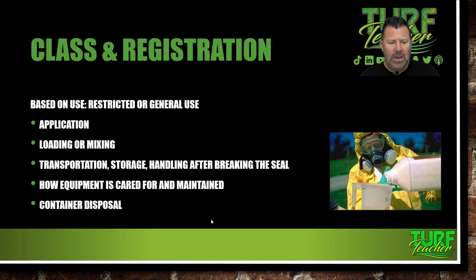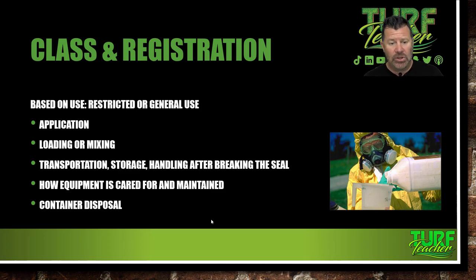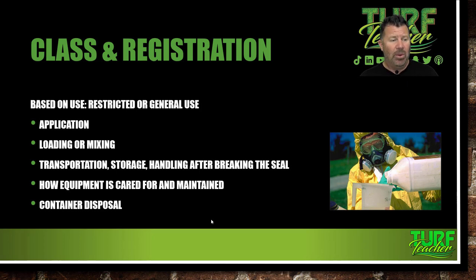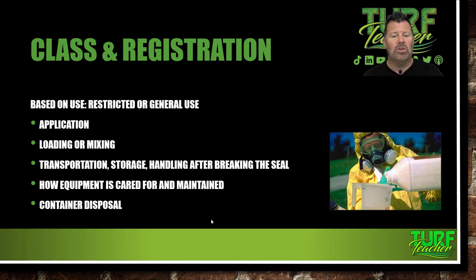Class and registration is based on restricted or general use. Restricted use pesticide is something you've got to have a license to purchase — you're not going to be able to get it at the big box store. General use pesticides you could pick up at Lowe's or Home Depot — that's what homeowners purchase. Homeowners don't need access to restricted use pesticides anyway. Pretty much everything we use every day is general use. Very seldom do we use a restricted use pesticide in the lawn care and landscape industry.